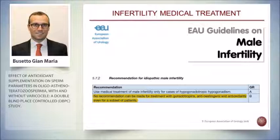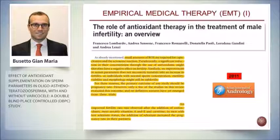The problem is that today this therapy must still be considered empirical, because the guidelines have not yet given a final recommendation. As stated in the guidelines: no recommendation can be made for treatment with gonadotropins, anti-estrogens, and antioxidants. So all medical treatments for infertility are still considered empirical, even if results from many papers are positive.